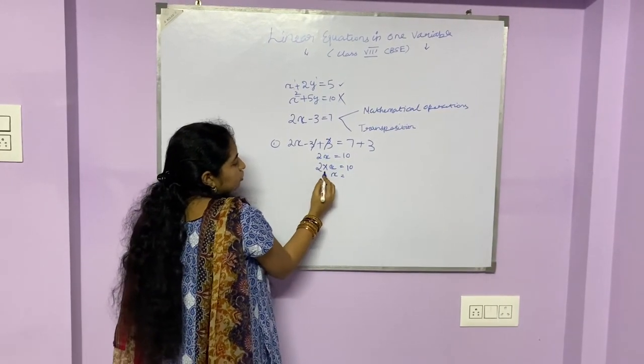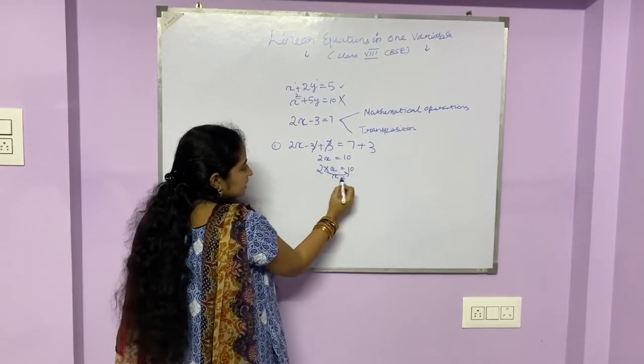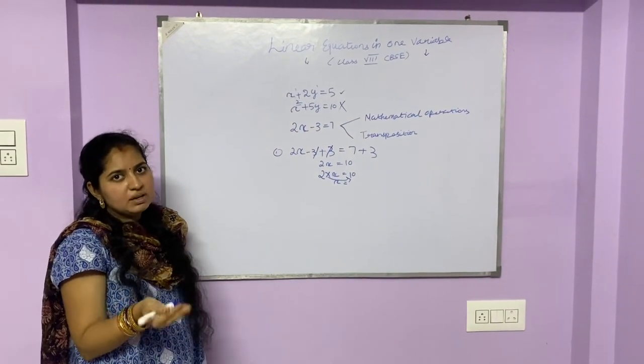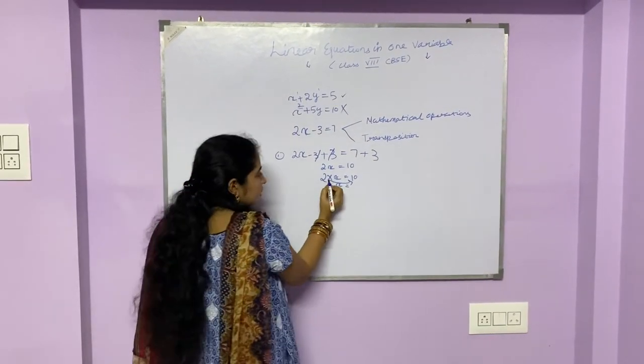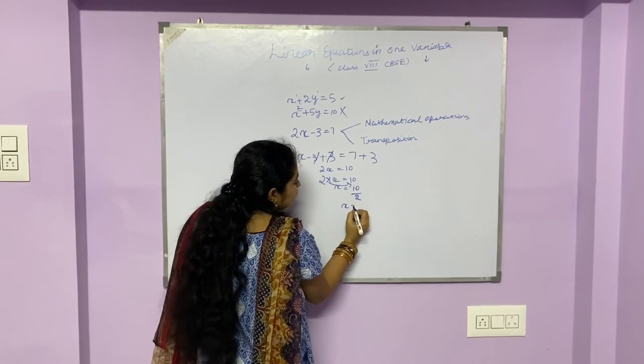When we find the value of x, the 2 goes to the right-hand side. And we know that whenever you change the side, the sign also changes. That is, your addition becomes subtraction, your multiplication becomes division and vice versa. So here we have multiplication sign and this now becomes a division. Hence, the value of x is 5.